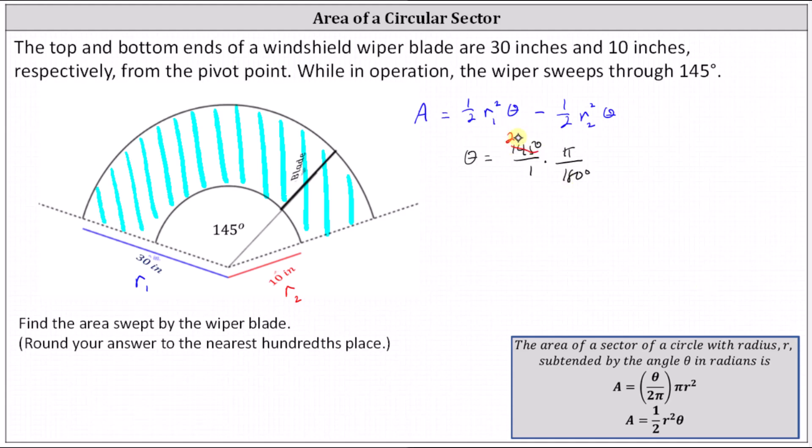There are 29 fives in 145, 36 fives in 180, which gives us θ is equal to 29 divided by 36 π radians.